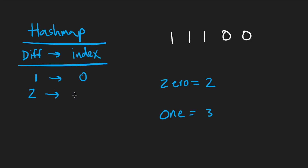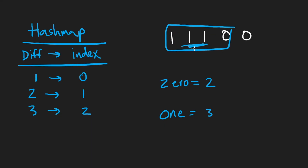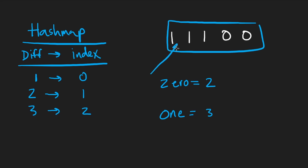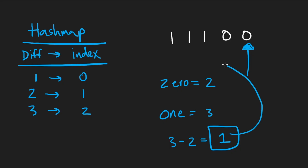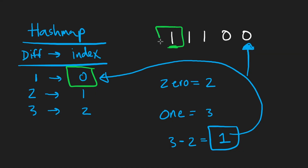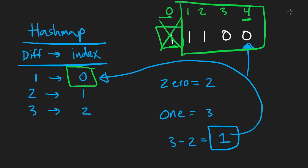Continuing the walkthrough: two maps to index one, three maps to index two. When we get to a surplus of two ones, we don't overwrite. When we get to a surplus of one, we don't overwrite either. At the point where we have three ones and two zeros, the difference is three minus two equals positive one. We look that up in the hash map — it's at index zero. We're currently at index four. So the window size is four minus zero, which tells us the size of that subarray. That is the logic behind this problem.